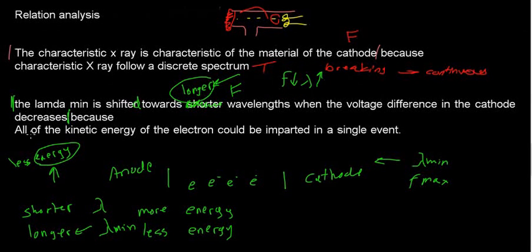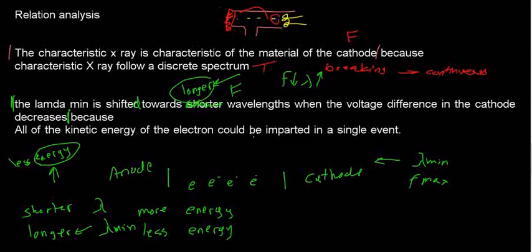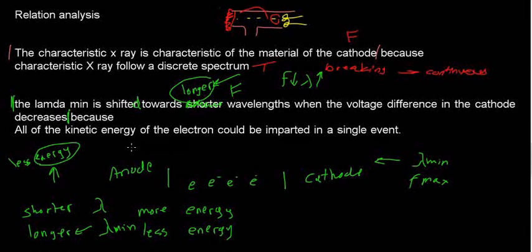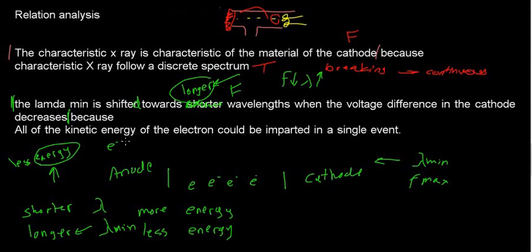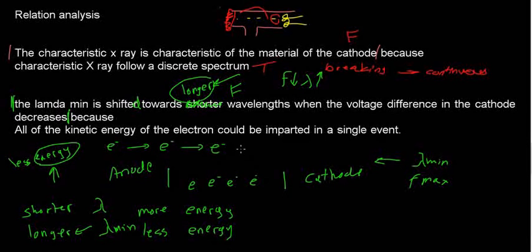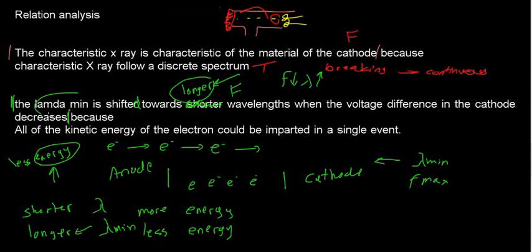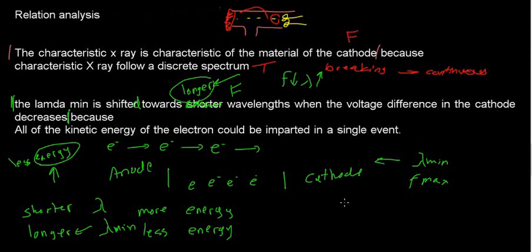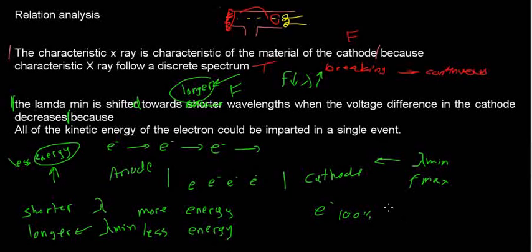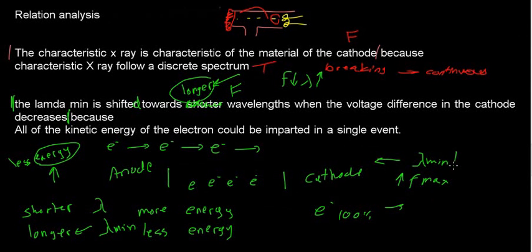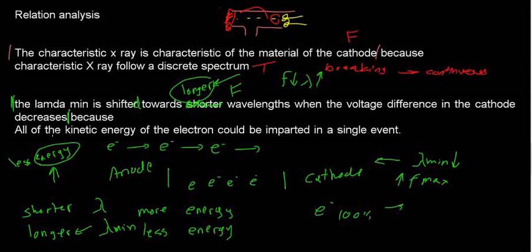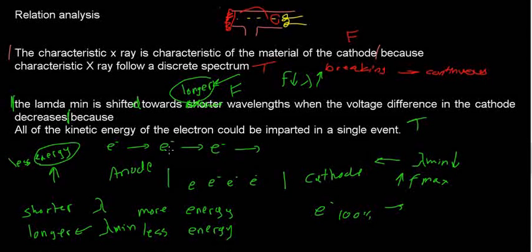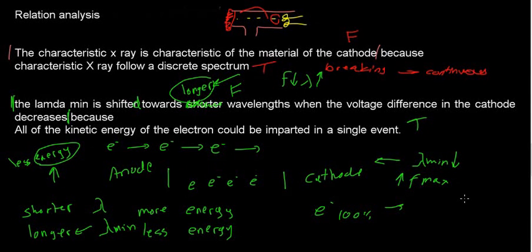Statement 2: 'All the kinetic energy of the electron could be imparted in a single event.' We've already discussed this — we have Bremsstrahlung where the electron loses energy through a series of interactions, but we also have the concept of lambda_min or F_max, which is when the electron loses 100% of its energy in one event, giving maximum frequency or minimum wavelength. So all the kinetic energy could be imparted in a single event — this is true. Hopefully this helped, and I'll see you in the next video.